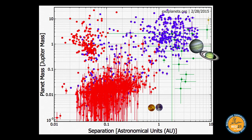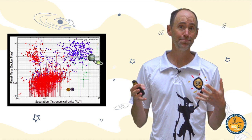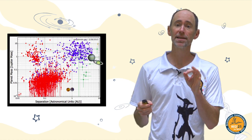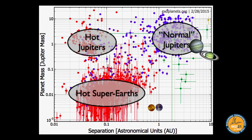As a recap, this is the population of exoplanets we've detected so far. These general populations still hold. The super Earths are this population of mostly red points close to their stars, at sizes or masses a little bit bigger than Earth. About a third to a half of all main sequence stars are thought to have super Earth planets around them, so they're a key population we'd like to understand.